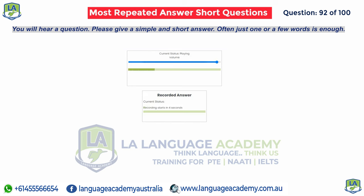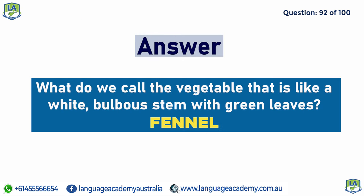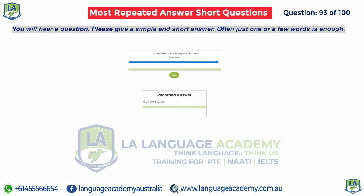What do we call the vegetable that is like a white, bulbous stem with green leaves? Fennel.